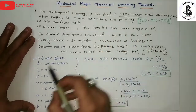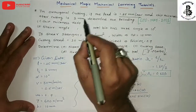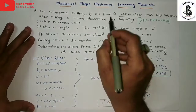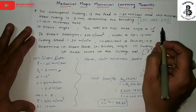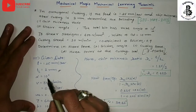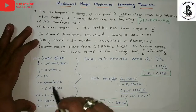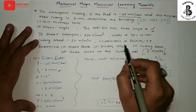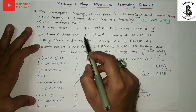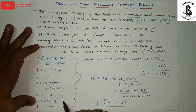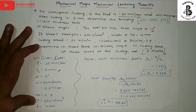Given data: feed F = 1.25 mm per revolution; chip thickness after cutting, indicated as TC = 2 mm; rake angle alpha = 10 degrees; cutting speed V in meters per minute, to be converted to meters per second; coefficient of friction mu = 0.9; shear strength tau = 600 Newton per mm square; width of cut B = 10 mm.